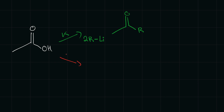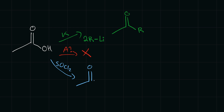Now if we want to create an aldehyde from a carboxylic acid, we cannot go directly. But there is something else we can do: we can change the carboxylic acid into an acyl chloride (acid chloride) using thionyl chloride (SOCl2). What happens is the OH group of the carboxylic acid is replaced with a chlorine. This acid chloride is actually more useful in creating an aldehyde, since we can't go directly from a carboxylic acid to an aldehyde.